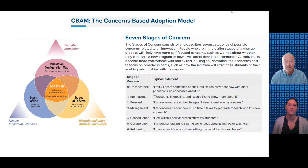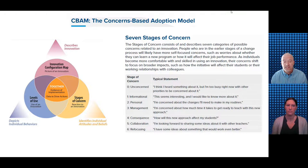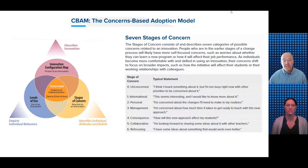Research shows people move through fairly predictable stages when implementing a new initiative. The Concerns Based Adoption Model, or CBAM, may be one way of illustrating this. The seven stages of concern within this model is a useful way of locating where people within an organization are relative to an incoming initiative. Having a sense of where people are in their awareness and processing of change can help leadership teams proactively anticipate challenges and normalize what the district will likely experience.